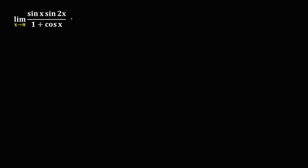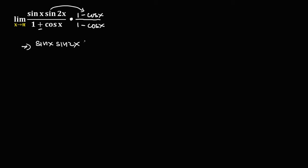First, multiply this equation by the conjugate of this denominator. Since this denominator has a plus, the conjugate is 1 minus cosine(x). Apply this to both the numerator and denominator. So we have sin(x) times sin(2x) times 1 minus cosine(x), all over the product of the conjugate pair.